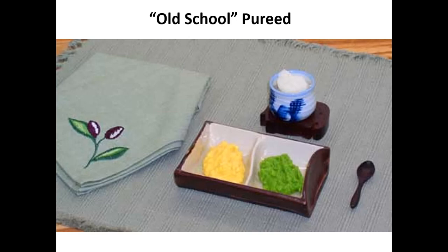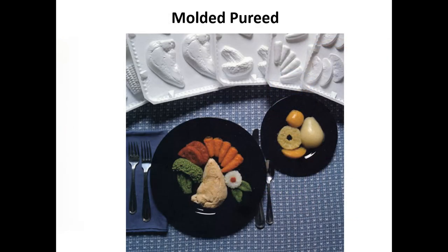Another dietary modification is the thickening of liquids. Thin liquids are harder for the mouth to handle, while thick liquids give the individual more control. Liquids can be thickened as part of the prescription, but you must be careful — because thickened liquids are not as refreshing or tasty, individuals can develop dehydration if not encouraged to drink enough. Also, molded purees are what purees should look like today — using molds makes them lovely to the eyes and can make all the difference to the appetite.